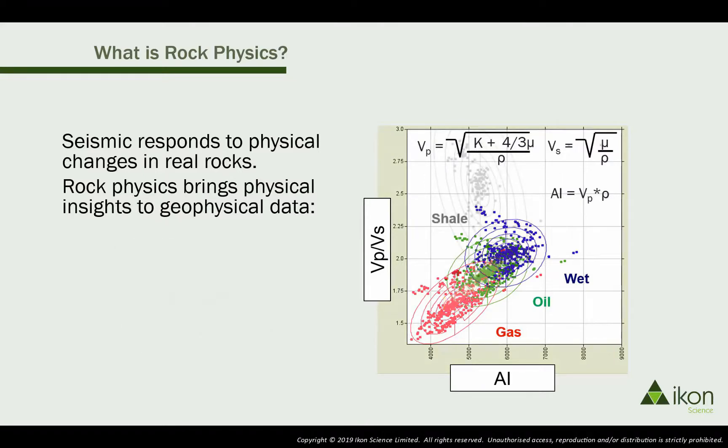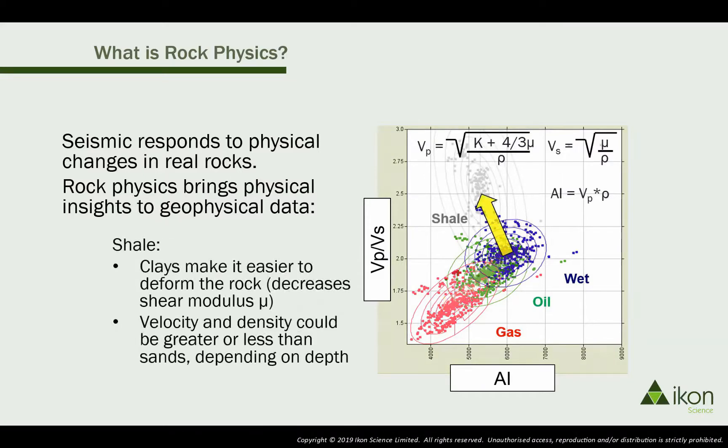In this particular example, we can also see that the shale plots in its own space due to its lower shear strength and hence higher VP VS ratio.